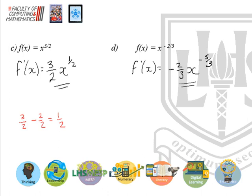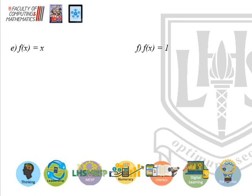Same rule applies throughout — the power comes down and you decrease your power by 1. Now the two special cases: for f(x) = x, the power is 1, so we get 1 × x^0. Anything to the power 0 is 1, so this is just 1. When differentiating x, it simply becomes 1 — the x disappears.